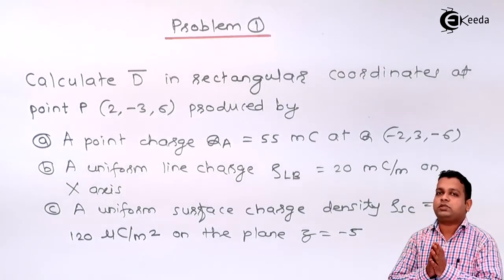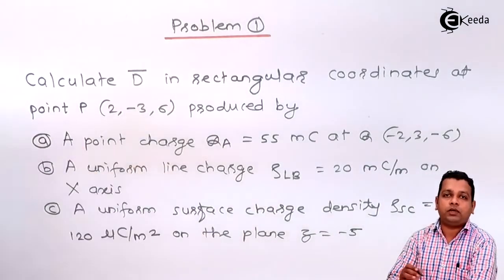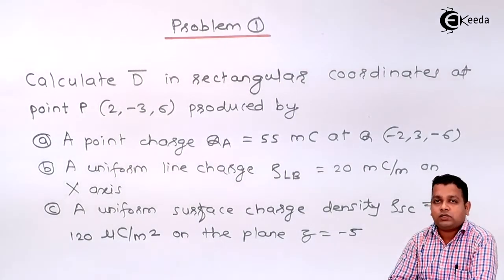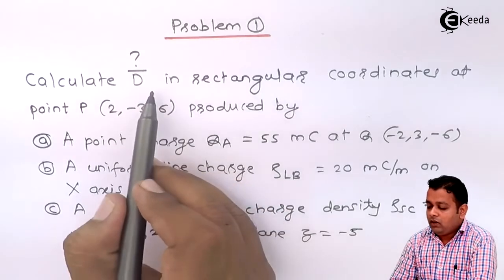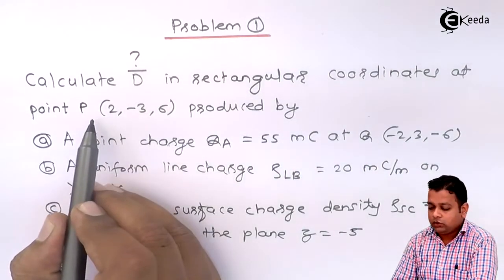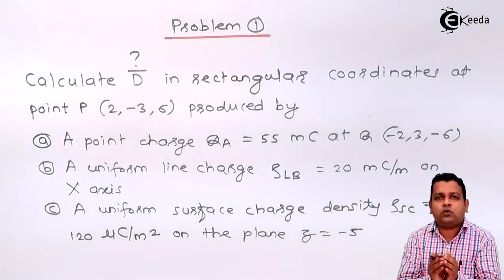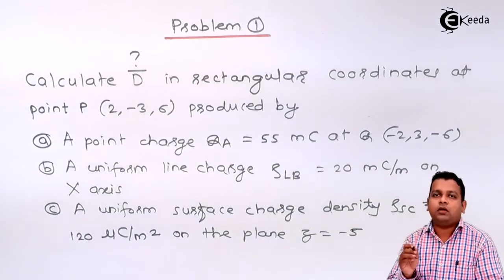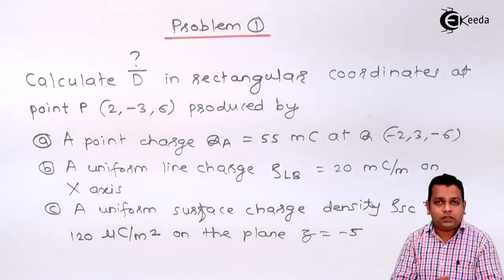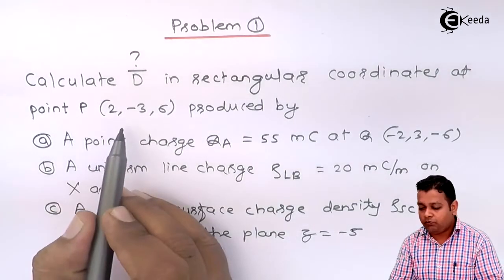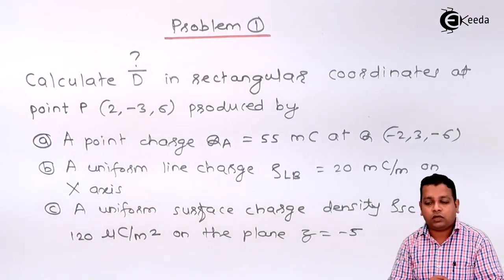Reading the problem statement: we have to calculate D bar, the representation of electric flux density, whereas E bar is used to denote electric field intensity. D bar has to be calculated in rectangular coordinates at point P, which is the field point. In the electric field, the source location is where the charge is, and the point where we test the field parameters is called the field point. Point P is at x=2, y=-3, z=6 — a rectangular coordinate system representation.